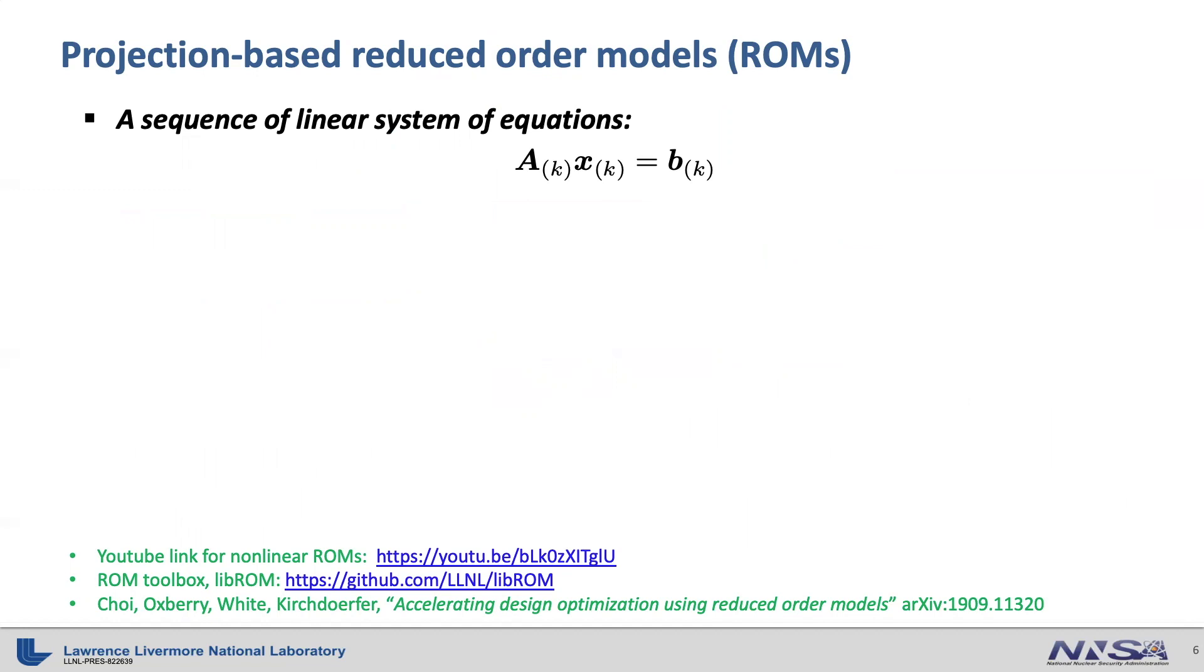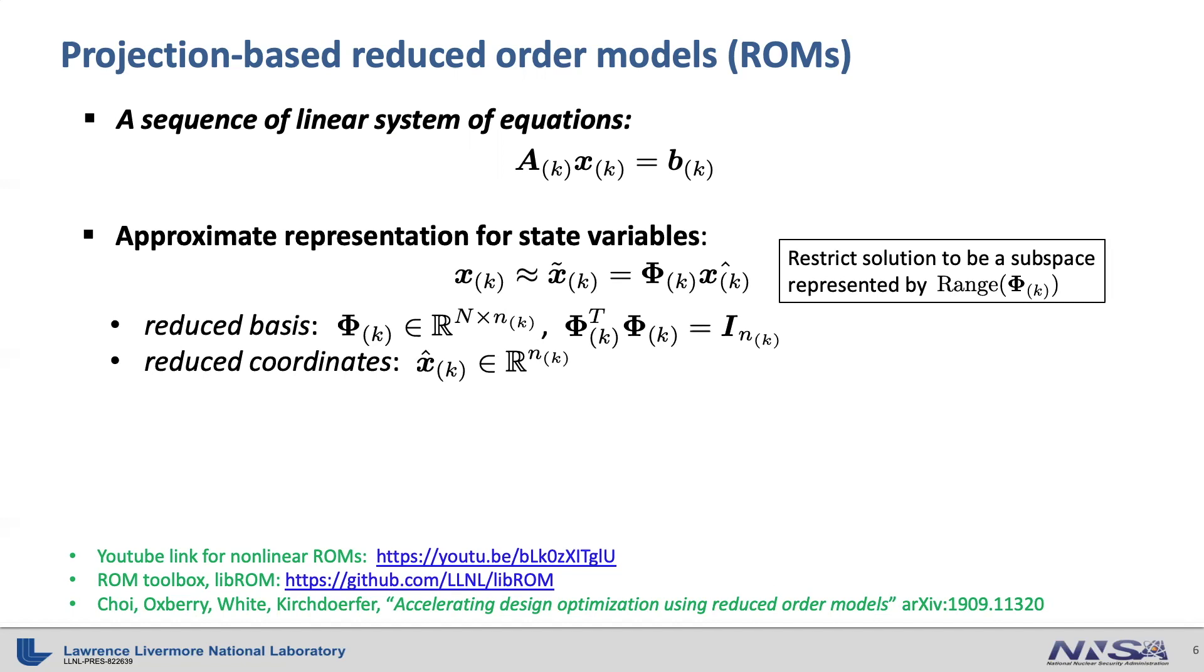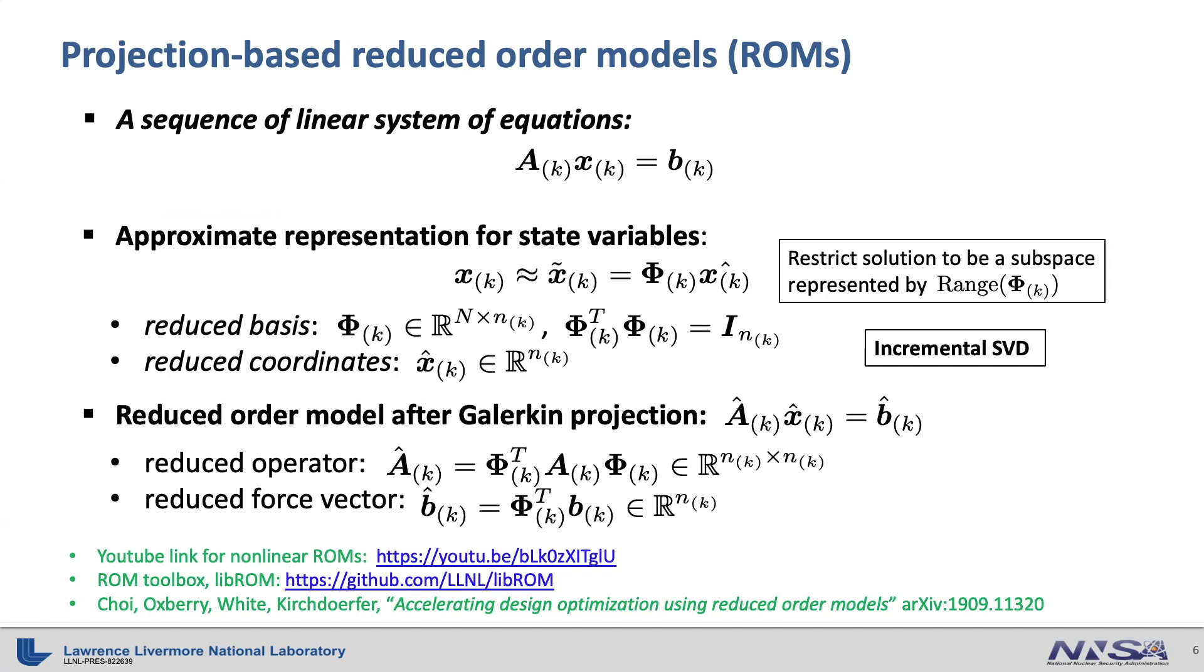Here, x is a state variable, b is force or right-hand side vector, and A is linear operator. First thing we do is to approximate the state variable as a linear combination of reduced basis phi, whose dimension is a lot smaller than the full order model dimension big N. Here, we obtain the reduced basis phi using incremental SVD, which is an efficient way of updating the old reduced basis with new coming data. The incremental SVD is efficiently implemented in open source code libROM, whose link can be found below. Then we plug the reduced solution representation into the linear system, which gives us an over-determined system. To close the over-determined system, we apply Galerkin projection, which gives us the reduced linear system with reduced linear operators. If you solve this, you will get the reduced solution, which can be restored by multiplying the reduced model solution by the reduced basis phi.